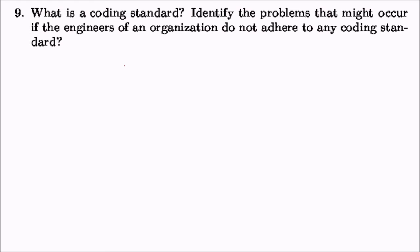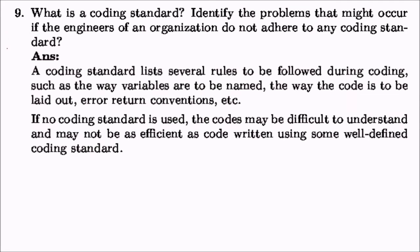What is a coding standard? Coding standards have become a vital ingredient of any SDLC. They list rules to be followed during coding, such as how to name variables, how code should be laid out, and what error-return conventions should be used. If no coding standard is adopted, code may be difficult to understand and less efficient than code written using well-defined standards.